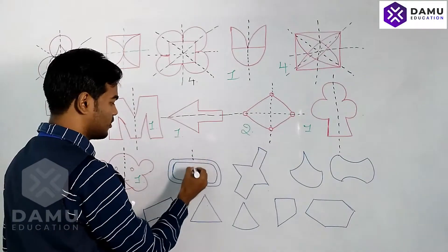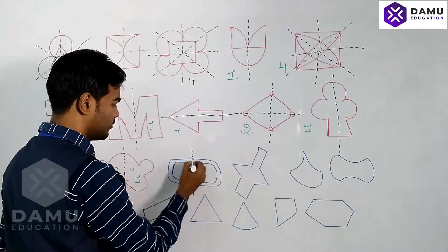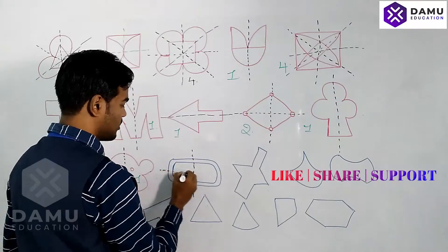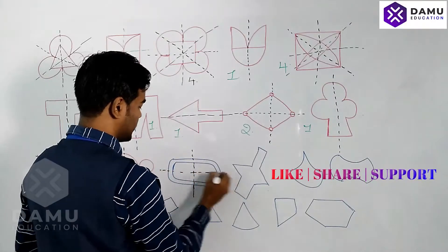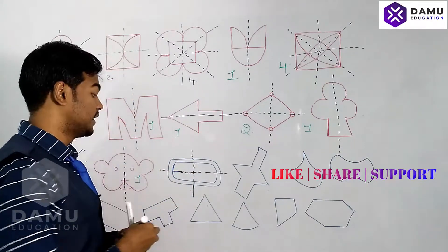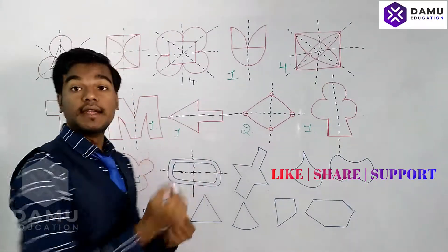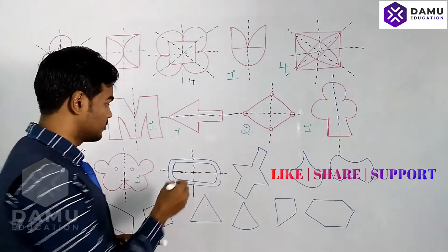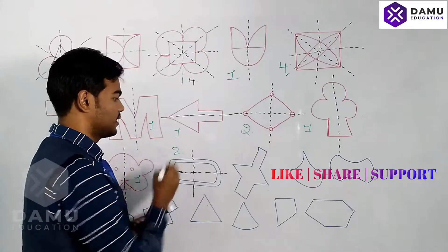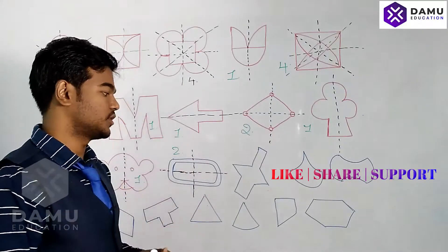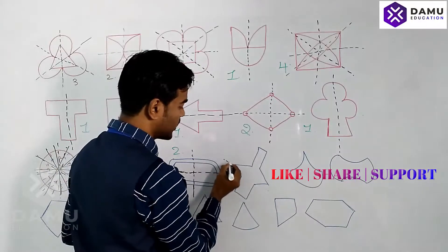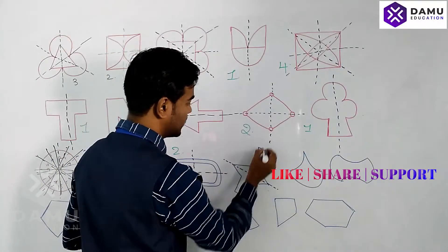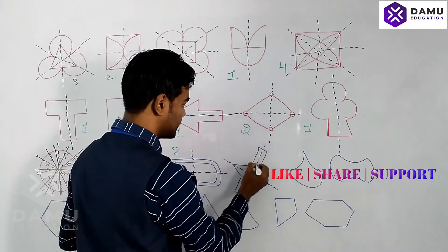For this shape, you can take a vertical line of symmetry and a horizontal line of symmetry, but there is no diagonal line of symmetry. So two lines of symmetry exist for this shape.